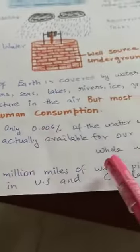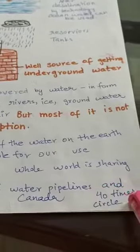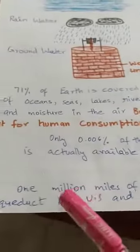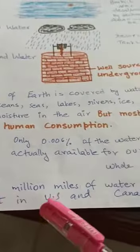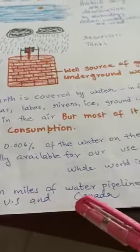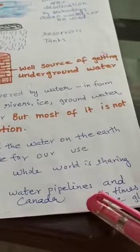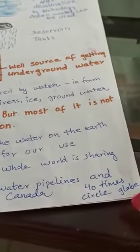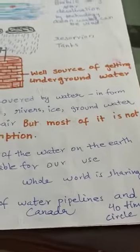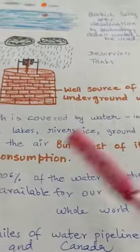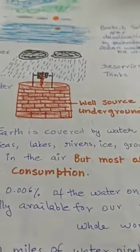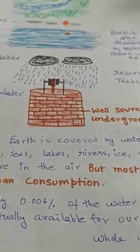There are 1 million miles of water pipelines in the US and Canada. That is enough to circle the globe 40 times.